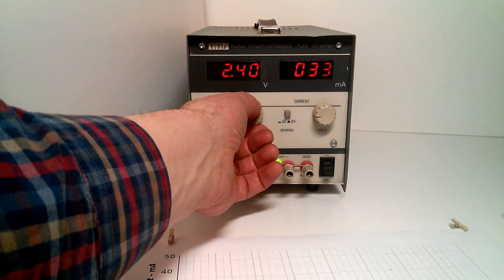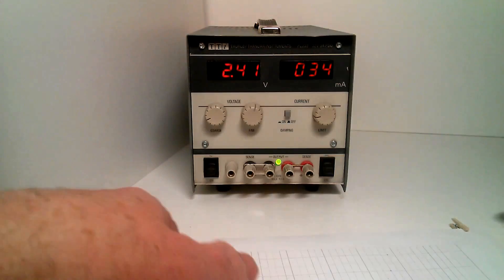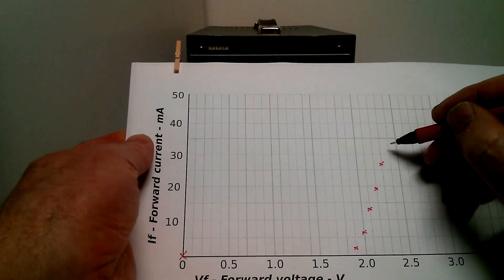At 2.4, we've got 34 milliamps, so here's 30, 4 will be about there.